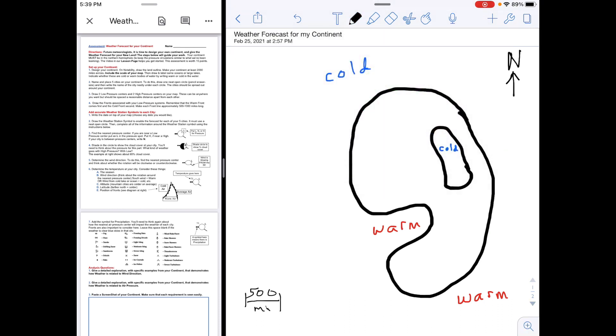Step two, I need to place five cities on my continent and I need those cities to be kind of spread out and to be circles that are about the size of an eraser. And remember, if you press and hold on Notability, you can make perfect circles.